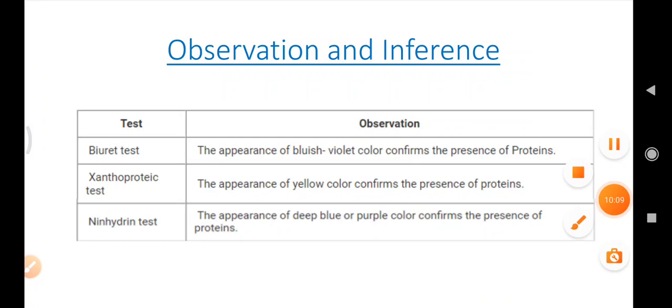Now, coming to the observation table and the inference, you can prepare your observation table by writing all the test names and as well as what are the reagents you can use for this test. And then, you can prepare the observation which you can observe with biuret test, xanthoprotic test and the ninhydrin test.